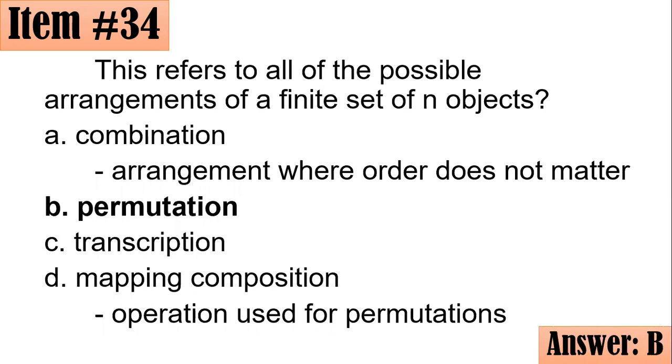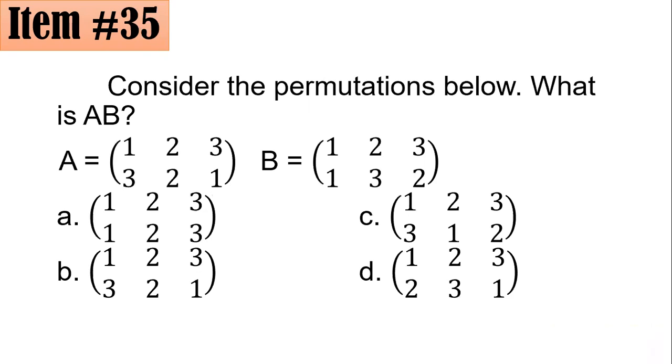Number 35. Consider the permutations below. What is A∘B? So you might be wondering how come it looks like this. So this is how we write in two-row form permutations.